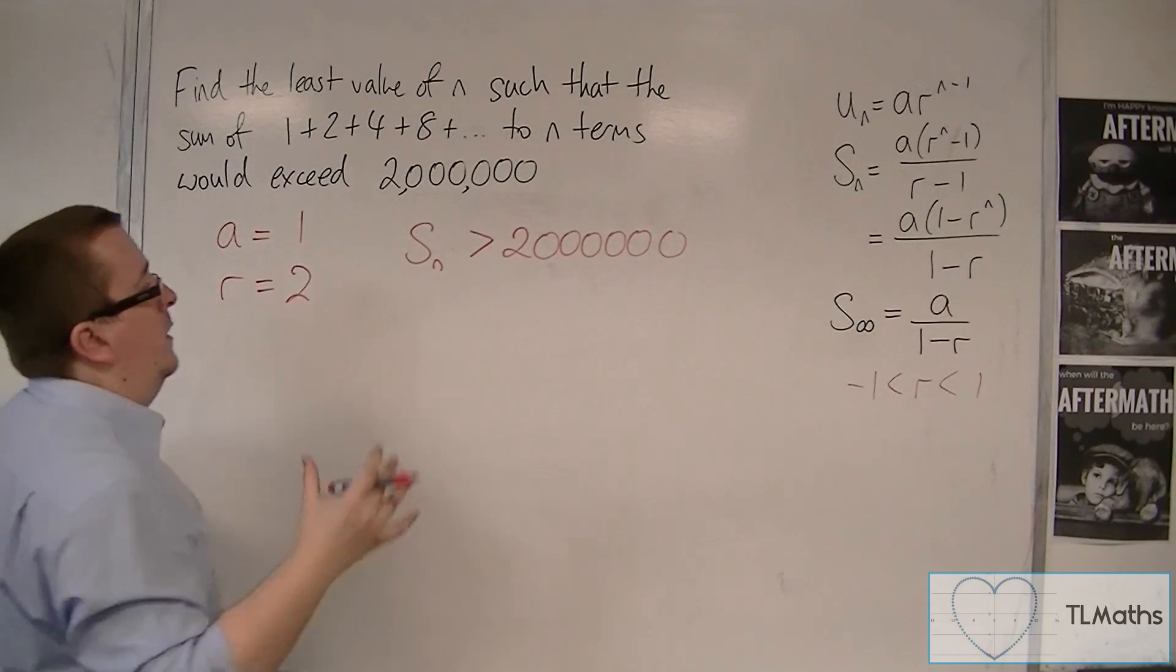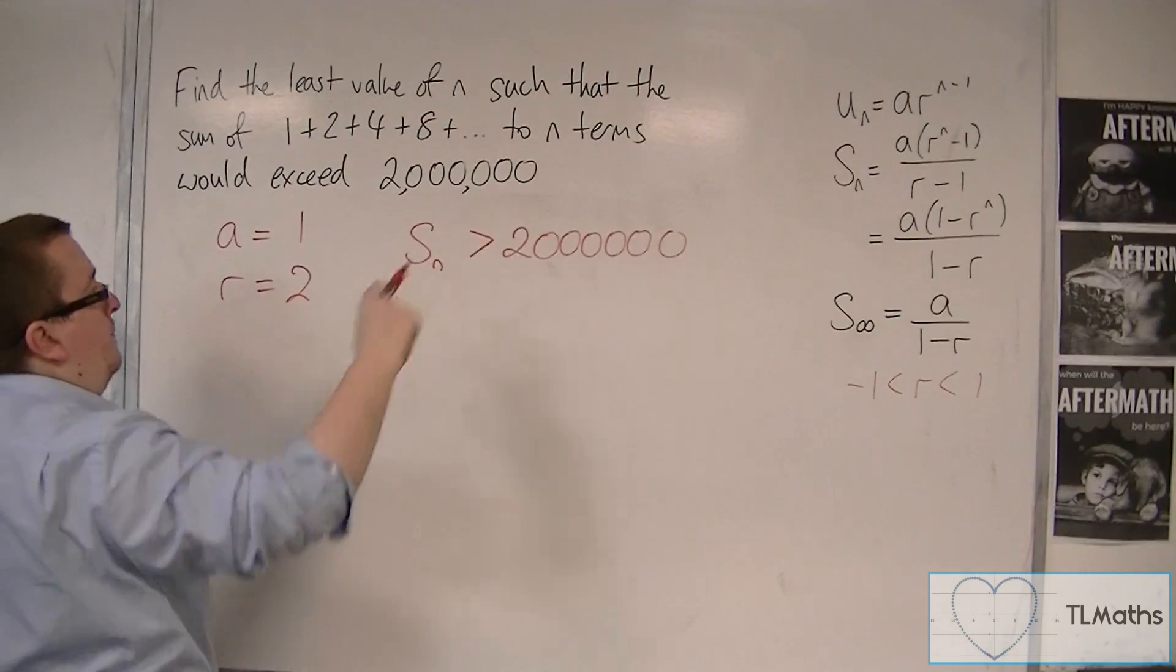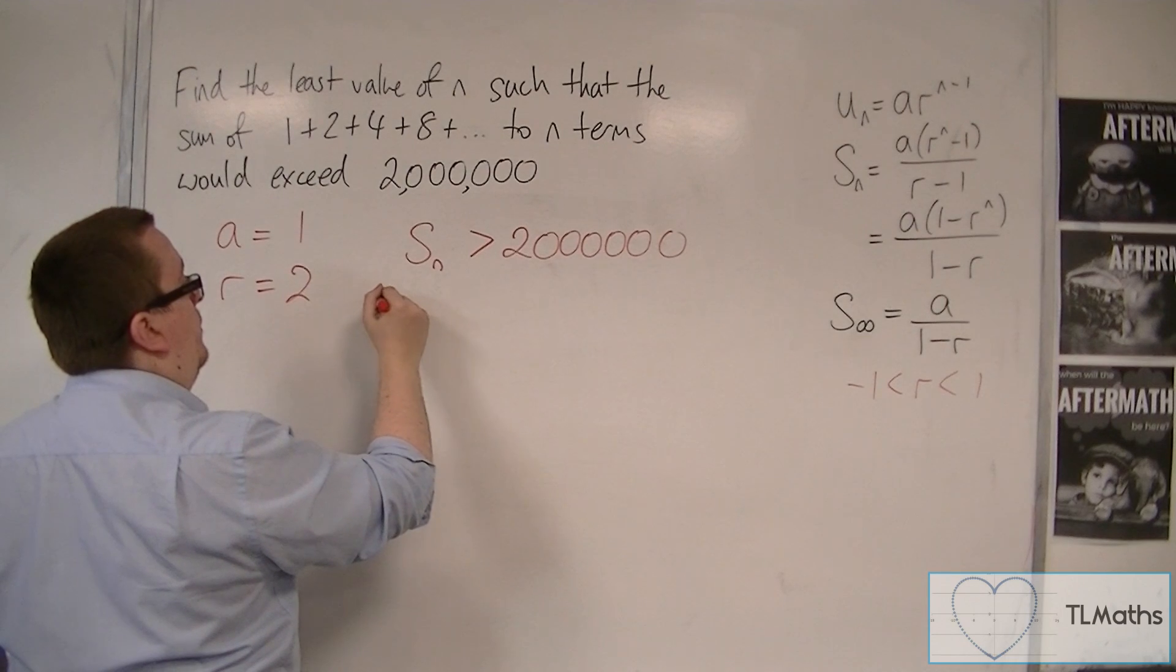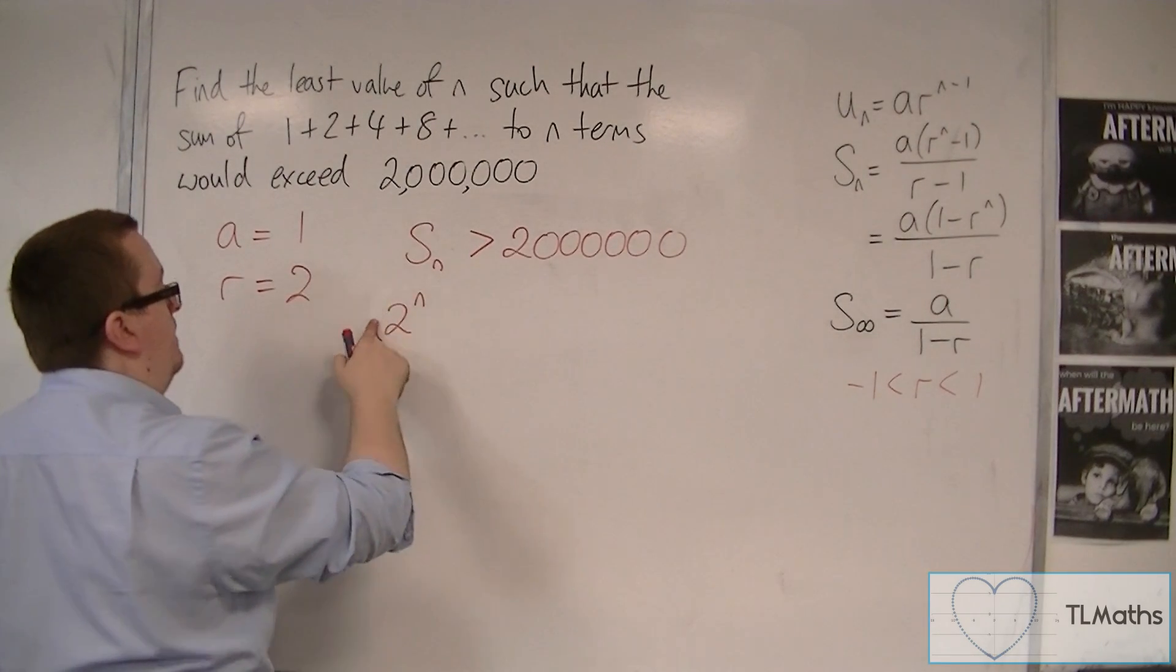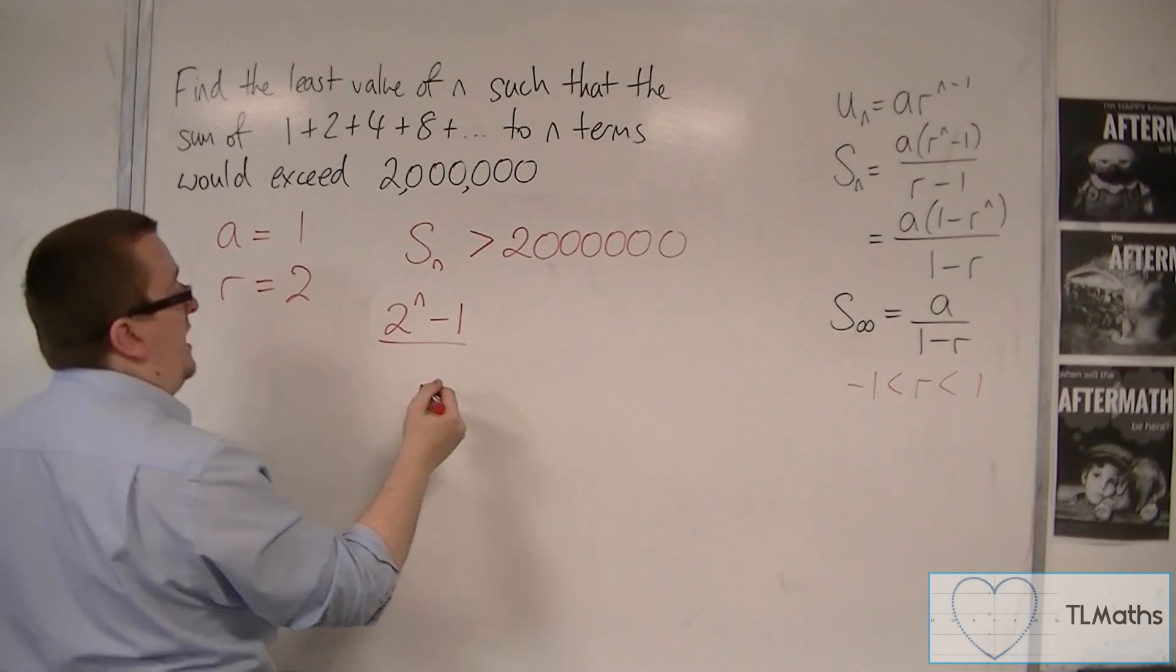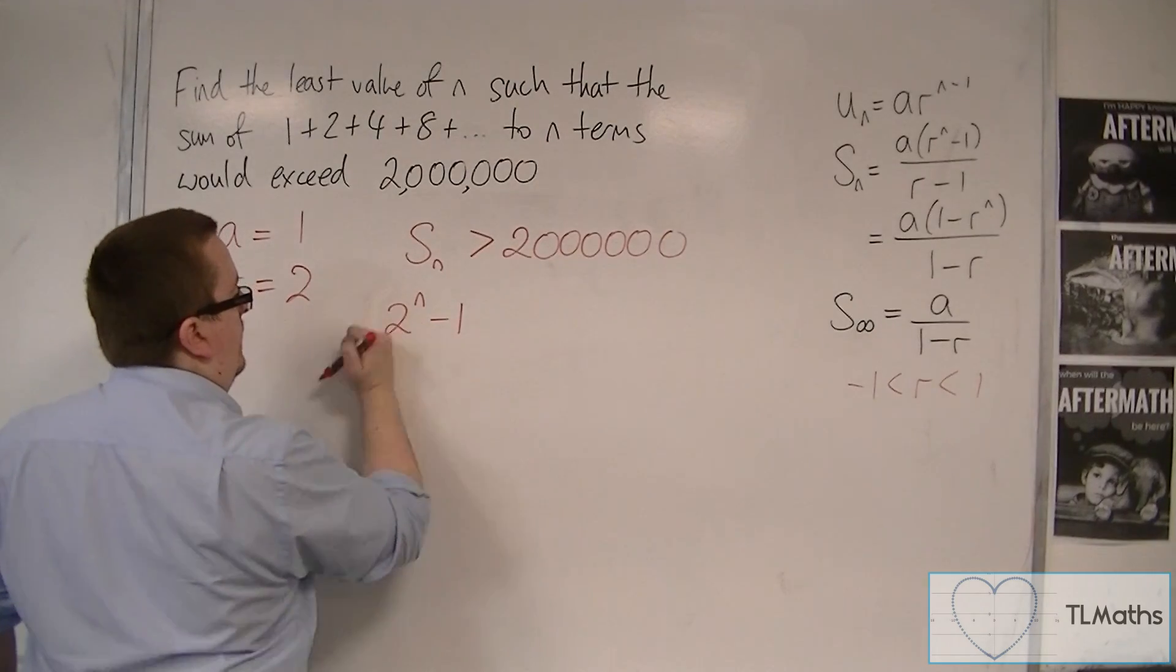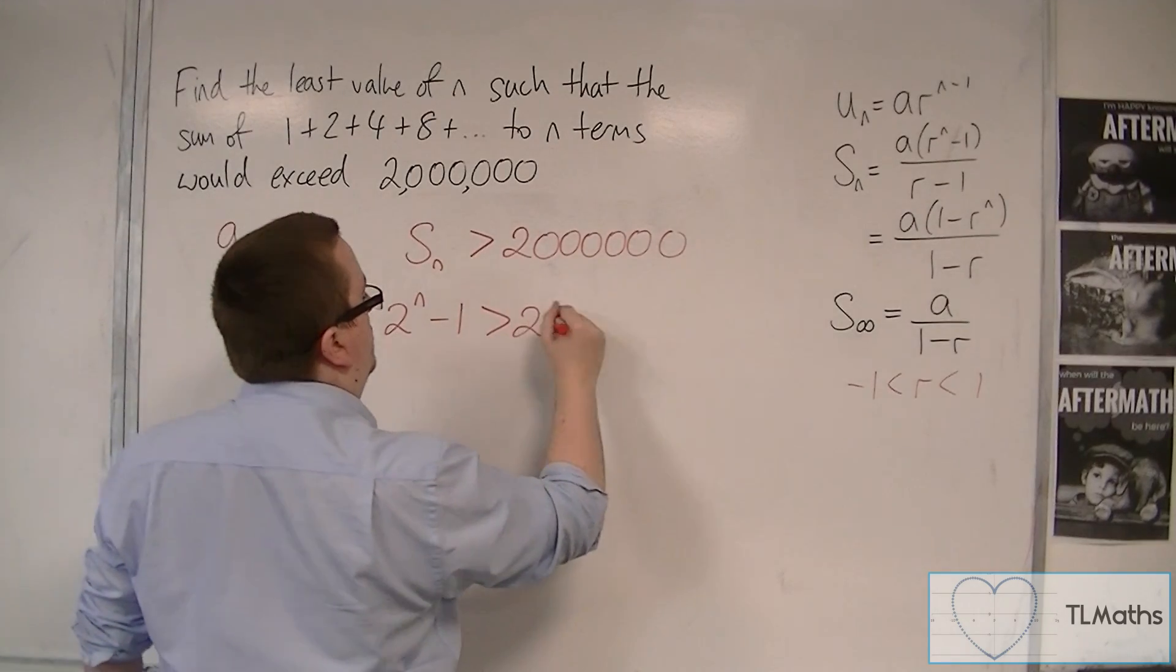So S_n is given by one of these formulas. I'll use the top one. So we have a, which is 1, times r to the n, so 2 to the n, take away 1, over 2 take away 1. Well, 2 take away 1 is just 1, so we could just write 2 to the n take away 1 is greater than 2 million.